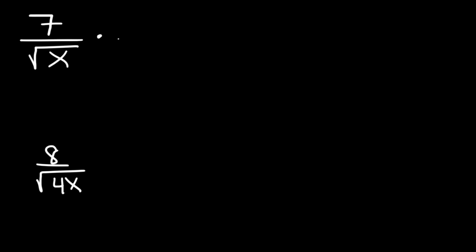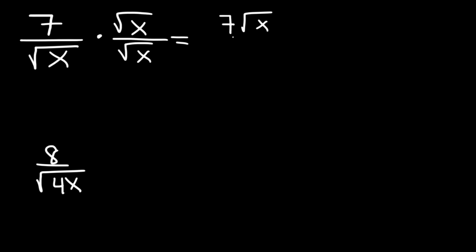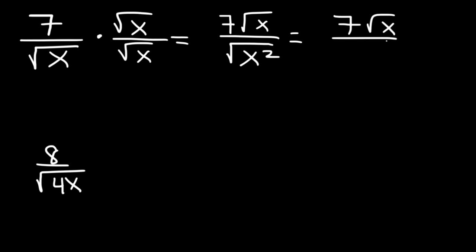Now go ahead and try these two examples. In the first example we have an x instead of a number, but we're going to do the same thing — multiply the top and the bottom by the square root of x. On top it's simply 7√x. On the bottom, x times x is x squared, and the square root of x squared is x. Some teachers may require you to put an absolute value sign here, but we won't worry about that in this video.